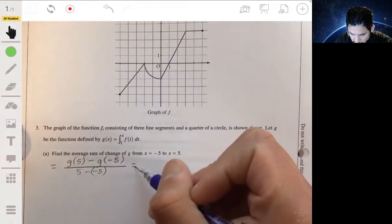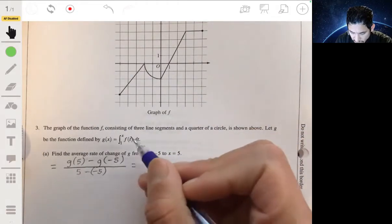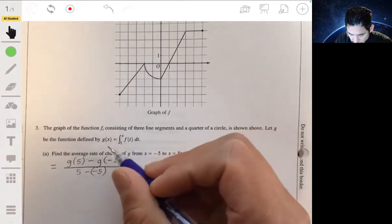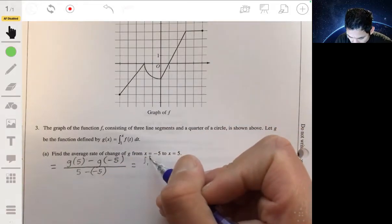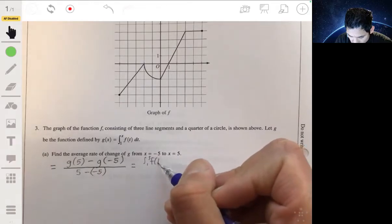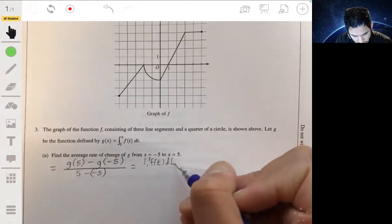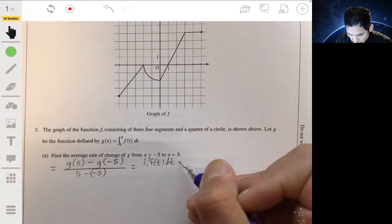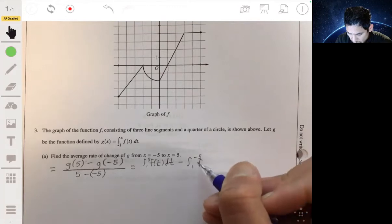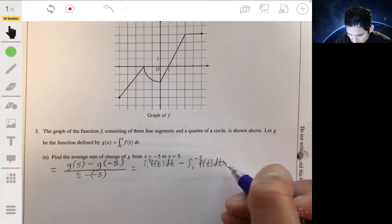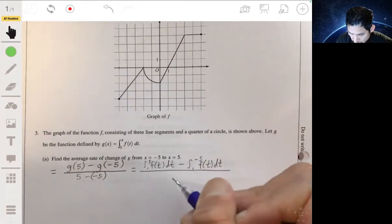Now, the key is to understand what G of 5 and G of negative 5 would be. So G of 5 would be equal to the integral from 1 to 5 of F of T dt. And G of negative 5 would be the integral from 1 to negative 5 of F of T dt all over 10.